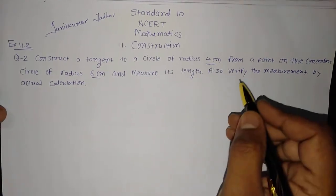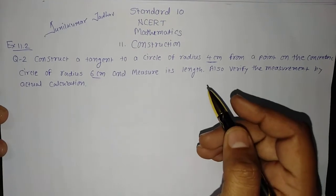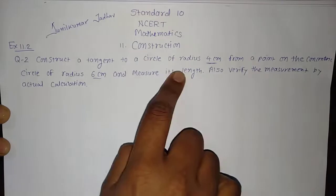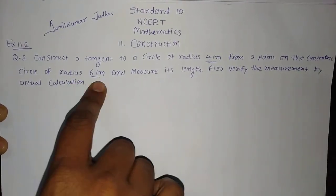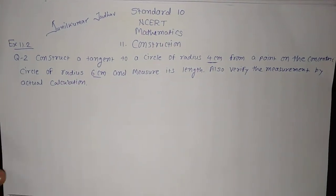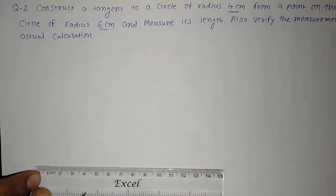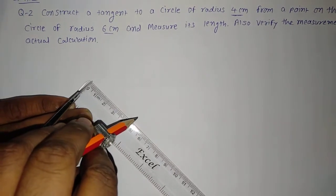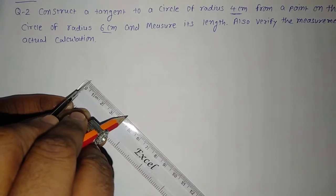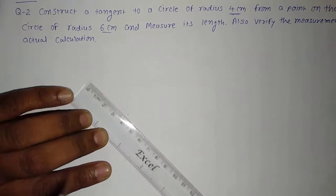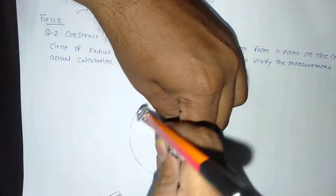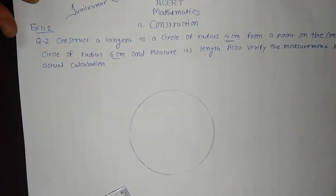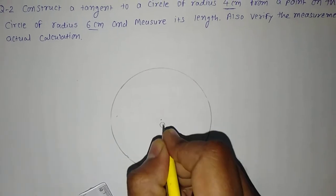We need to measure the length of the tangent and also verify the measurement by actual calculation. So first of all, let us begin by constructing a tangent to the 4 cm radius circle. I will take 4 cm on the compass. This is 4 cm, so I will take this center and 4 cm as the radius and draw the circle. This is the center; let me say this center is O, and this is the 4 cm radius circle.